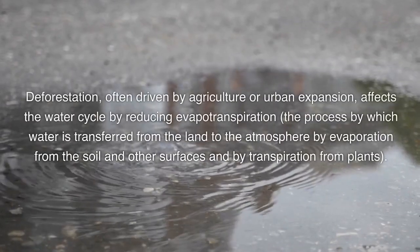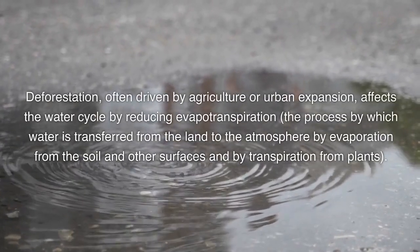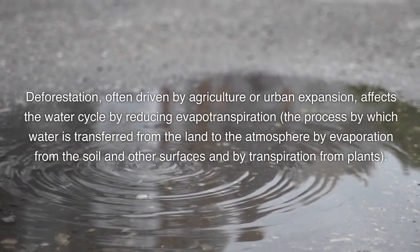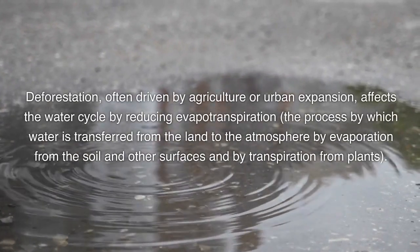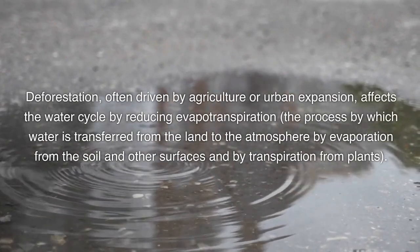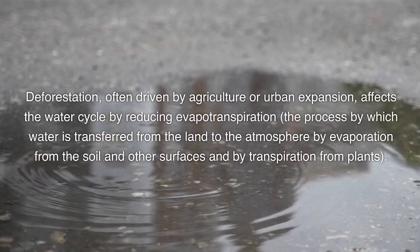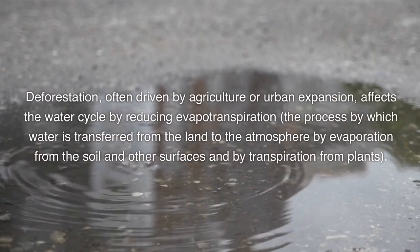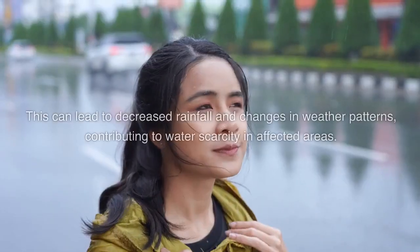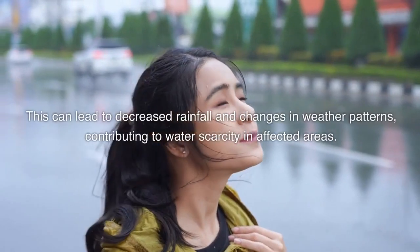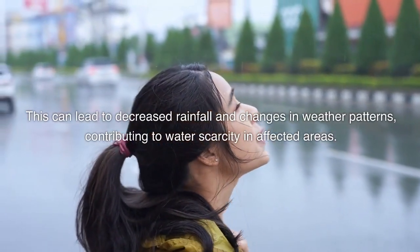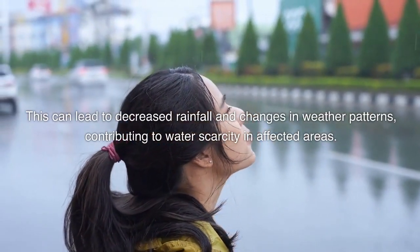Deforestation, often driven by agriculture or urban expansion, affects the water cycle by reducing evapotranspiration — the process by which water is transferred from the land to the atmosphere by evaporation from the soil and other surfaces and by transpiration from plants. This can lead to decreased rainfall and changes in weather patterns, contributing to water scarcity in affected areas.